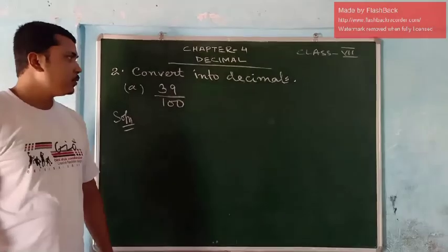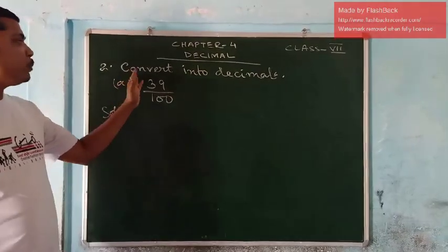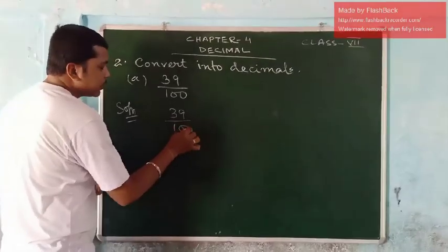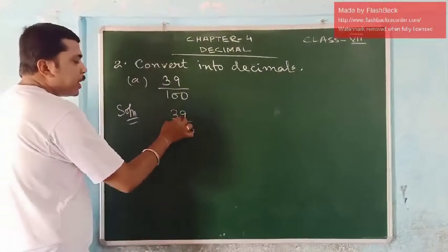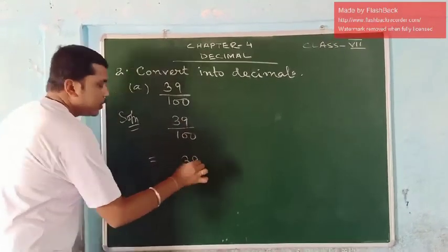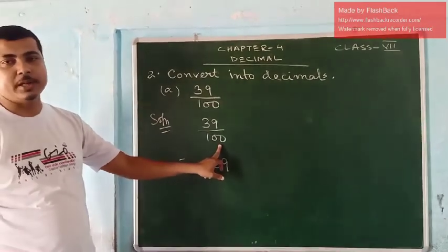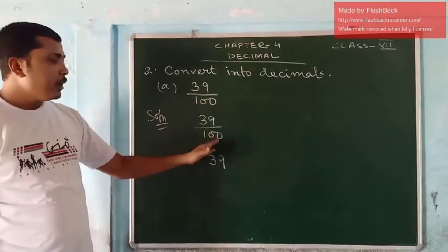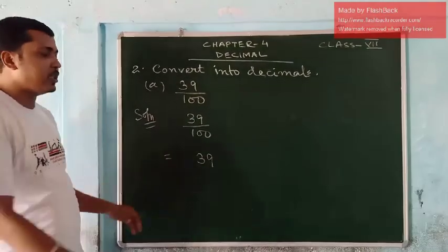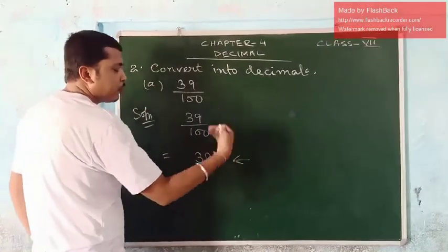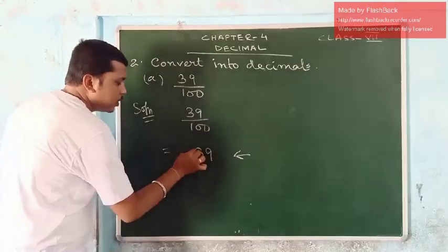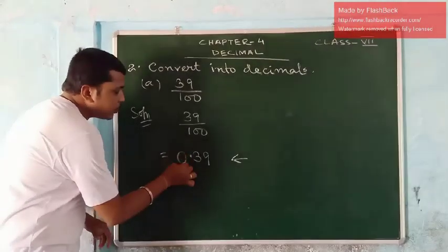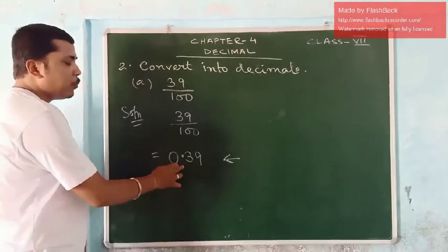Now let us write question number 2. In question number 2, we have to convert this into a decimal number. How to convert? First of all, we should always rewrite the question. Whatever number we have in the numerator, write it here. Now you have to see how many zeros are there in the denominator. In our denominator, we have 2 zeros. That means you have to place the decimal before 2 digits, counting from right to left. Before decimal, if there is no digit, you have to write a 0. So the answer is 0.39.